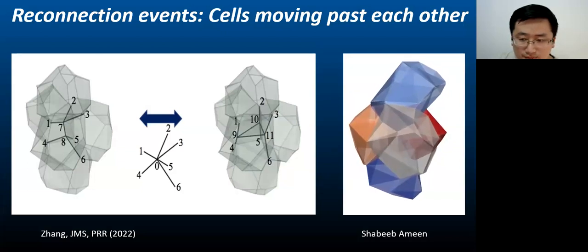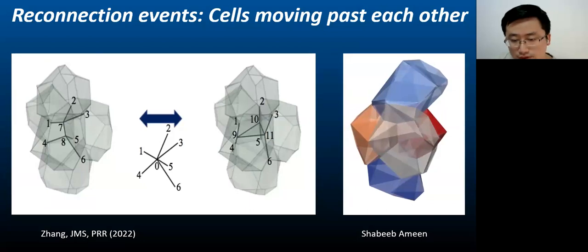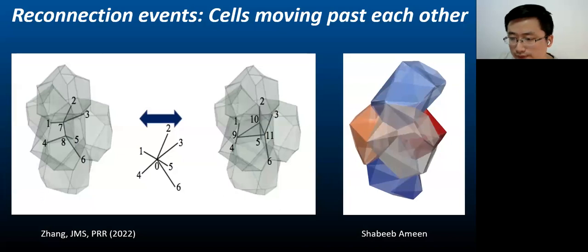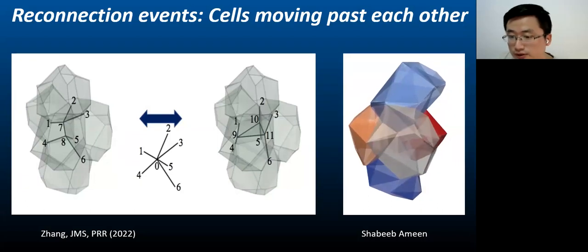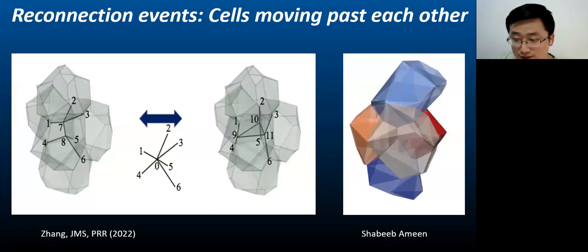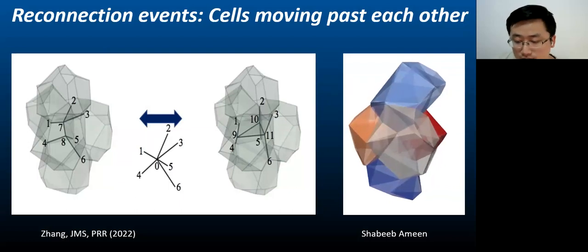As for how cells exchange neighbors during a reconnection event, we focus on edges going to triangles or triangles going to edges. To determine if a reconnection event occurs, we look for edges with edge lengths less than a threshold length LTH. If there are indeed such edges or triangles, we choose one of the edges randomly and perform an edge to triangle reconnection event, in which the edge vanishes and is replaced by a triangle whose normal vector is parallel to the initial edge. In the other direction, we can also choose one of the triangles randomly and perform a triangle to edge reconnection event.